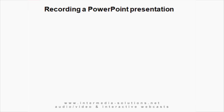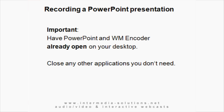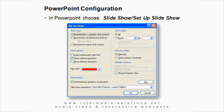Now we are ready to set up a PowerPoint recording. First of all, make sure that the Windows Media Encoder and PowerPoint are both open on your desktop. Open up your PowerPoint and choose Slideshow, Setup Slideshow. Set things up as follows: presented by the speaker, show without narration, use hardware graphics, all the slides, manually. And most importantly, down here, the 640x480 — that's very, very important. Then click OK.